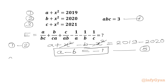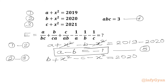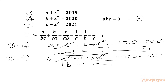Now we will subtract the third equation from the second one. So we write: b plus x² minus c minus x² equals 2020 minus 2021. Again we cancel the x² terms, getting b minus c equals negative 1. Let us call this equation number 6.